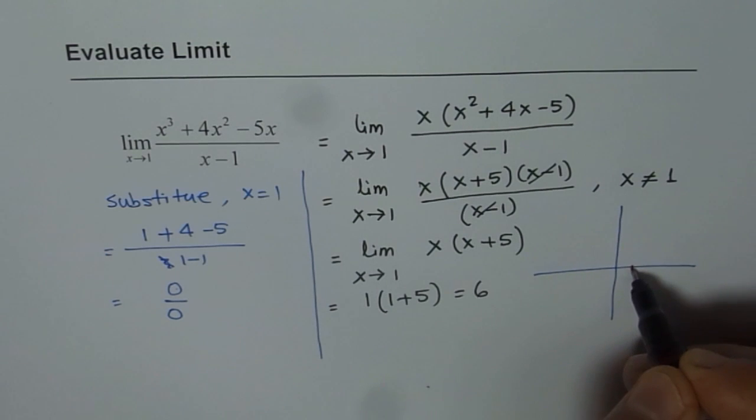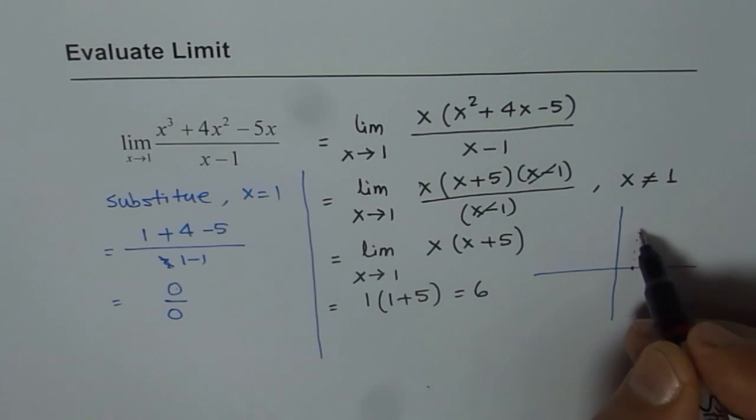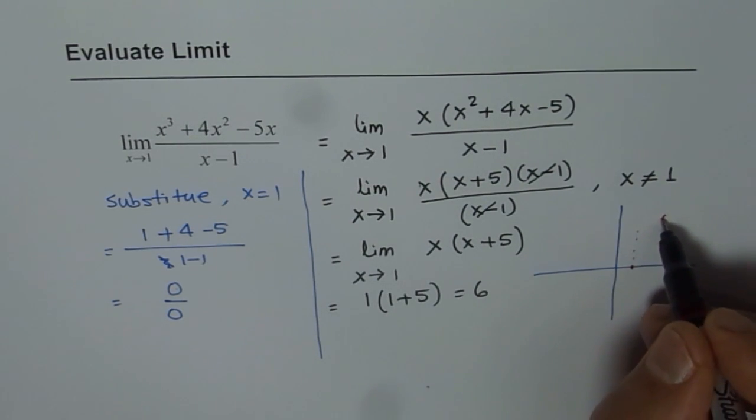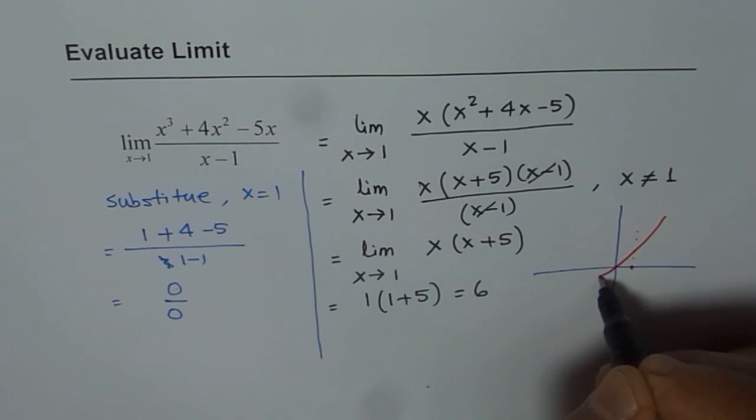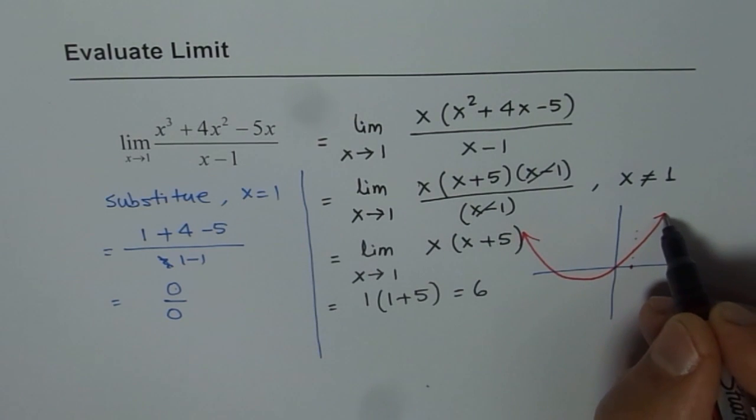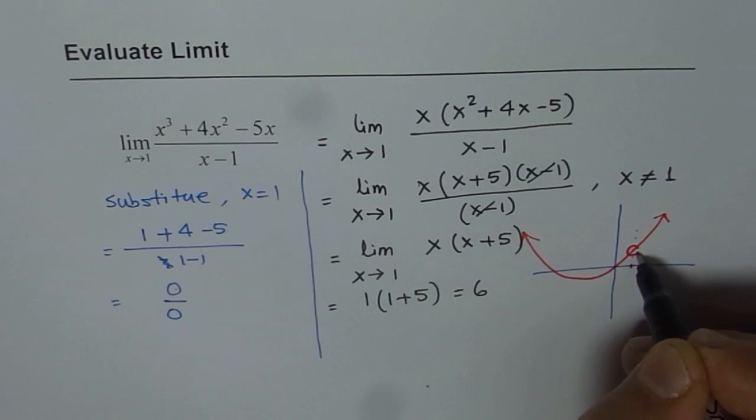So let's say this is our 1. So at 1, somewhere there will be a hole. We will figure out where. And then the graph of the function seems to be like a parabola, kind of like this. So that is the graph of the function where there is a hole here.